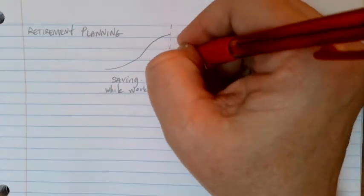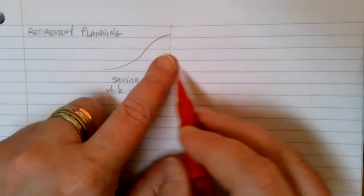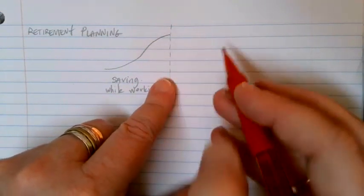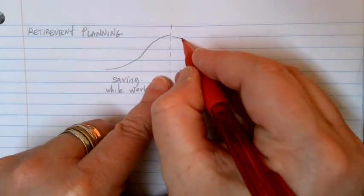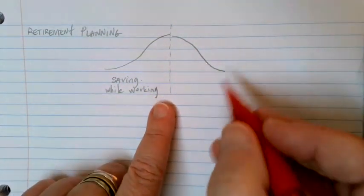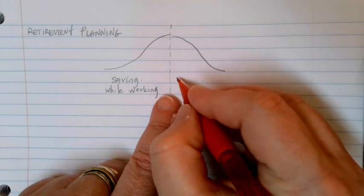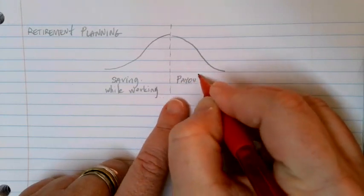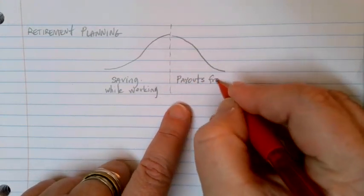Then when we retire and stop working, now we're going to start draining out all of this money that we've saved up over time, and we want this to last throughout our retirement until we die. This is basically what we're going to be doing is taking payouts from our account.